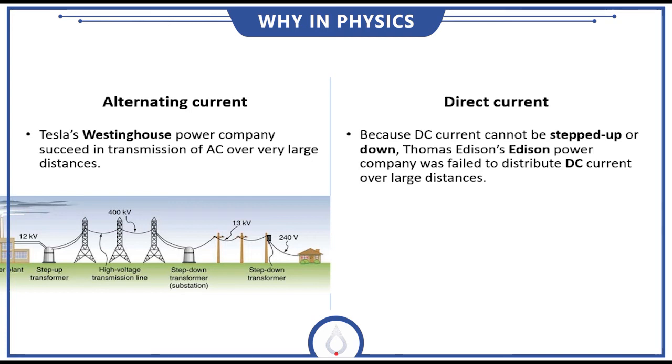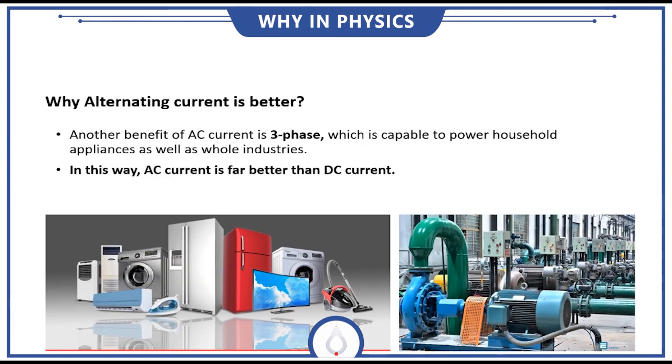On the other hand, the Edison's Power Company was unable to distribute electricity over the larger distances. This was because the direct current couldn't be stepped up or stepped down.